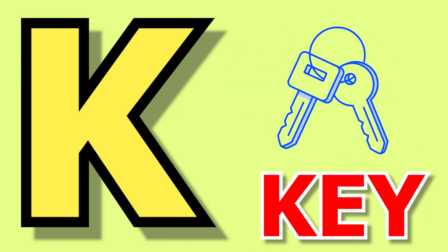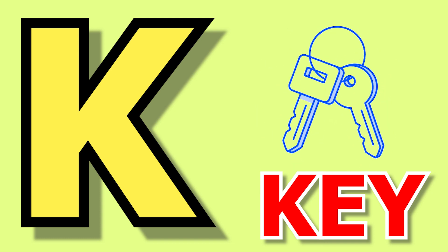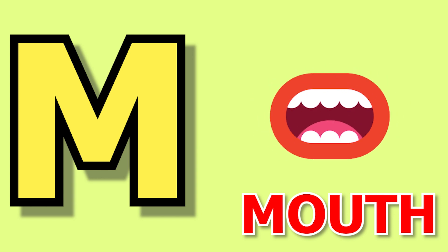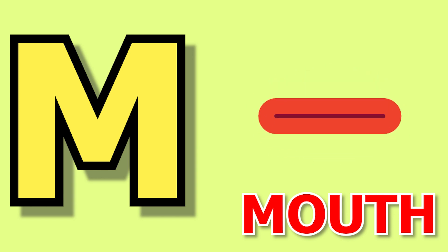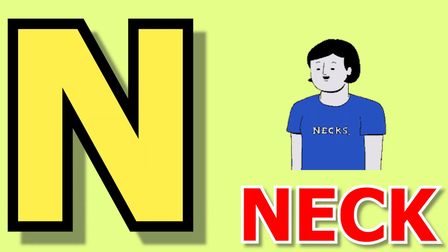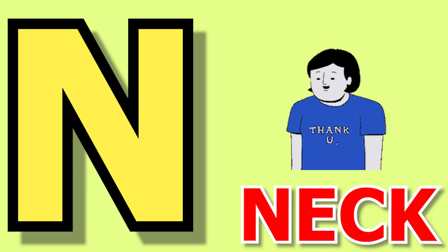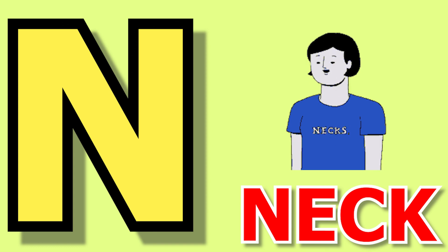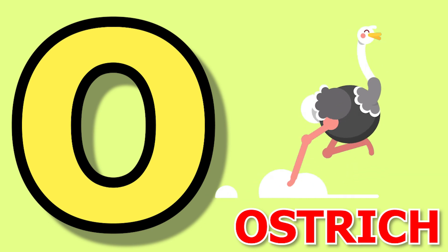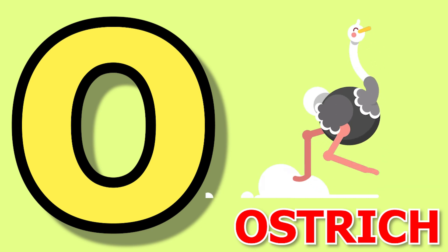K for key, key means chubby. L for locate, locate means locate. M for mouth, mouth means moo. N for neck, neck means garden. O for ostrich, ostrich means ostrich.